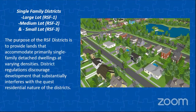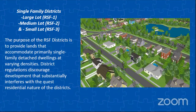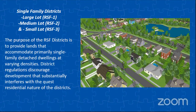Our single family districts are very similar to our current single family districts. Right now we have RS1, RS2, and RS3. In the new ordinance we have our large lot district of RSF1, medium lot RSF2, and our small lot RSF3. The purpose of these districts is to provide lands that accommodate primarily single family detached dwellings at varying densities. District regulations discourage development that substantially interferes with the residential nature of the districts.